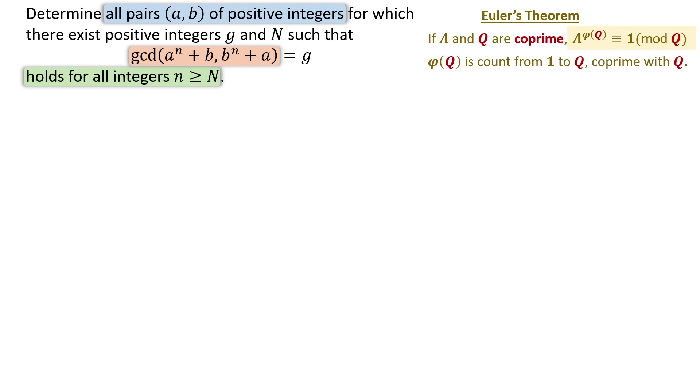In this problem, we consider a number co-prime with both a and b. Let's say q equals a b plus 1, then q is co-prime with both a and b.